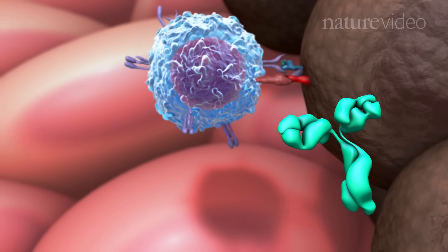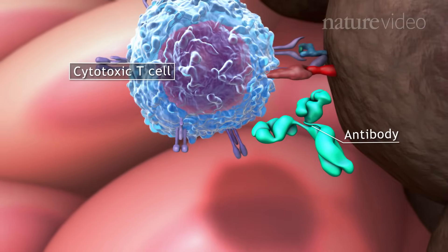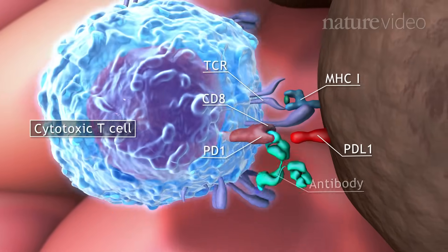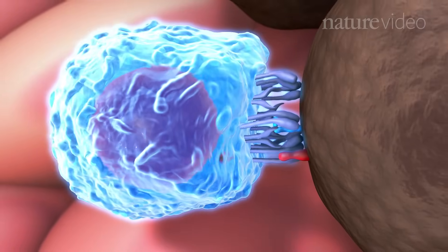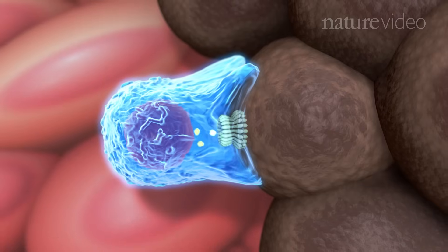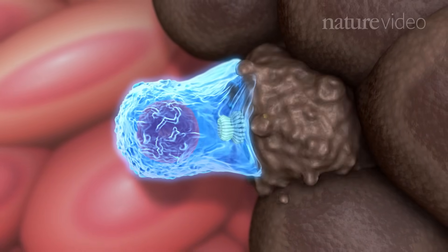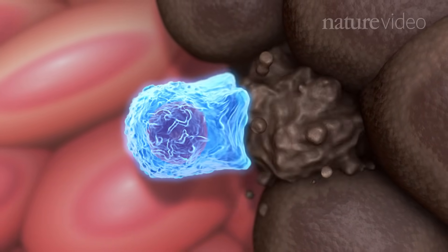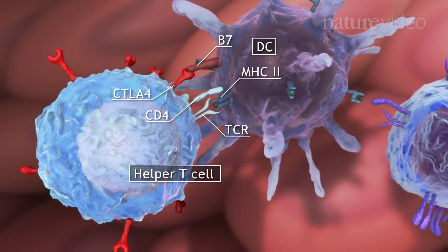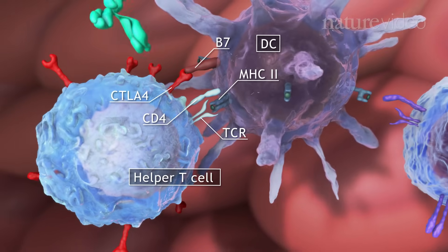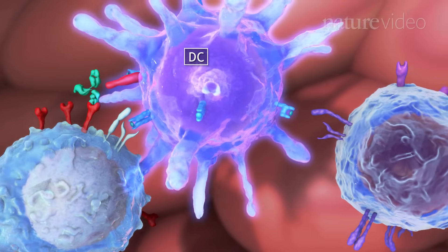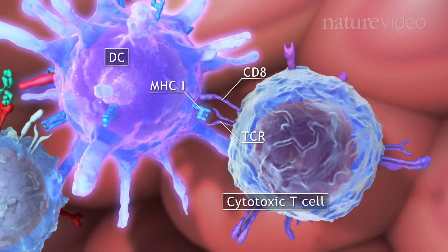An alternative approach is to target the immune checkpoints. For instance, antibodies that bind to PD1 stop this molecule from switching off cytotoxic T cells. Another immune checkpoint being targeted is CTLA4. Blocking this molecule helps DCs to drive anti-tumour T cell responses.